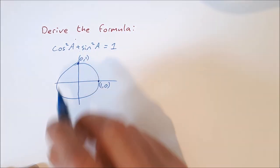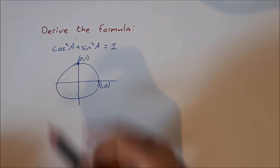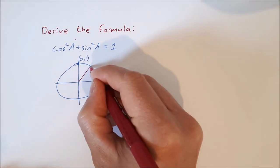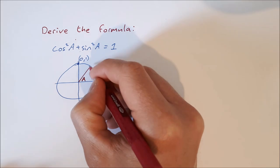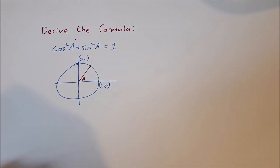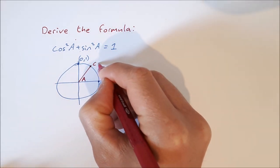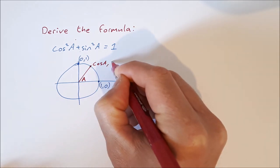And (0,1) goes there. Then we put in an angle in the first quadrant, let's call it angle a, and that gives us a point up here on the unit circle at (cos a, sin a).